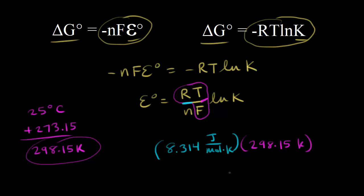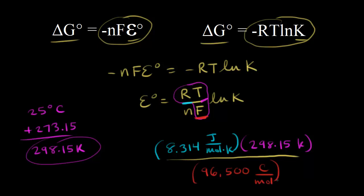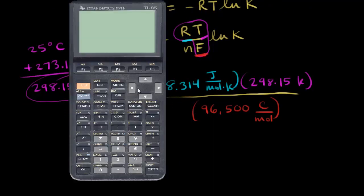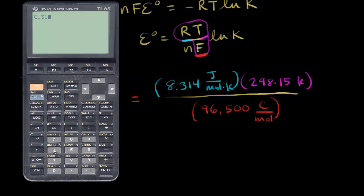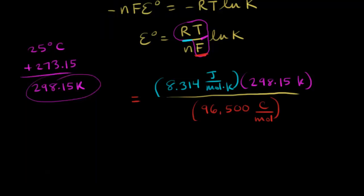This is all divided by Faraday's constant, F, which is 96,500 coulombs per mole — the charge of one mole of electrons. So we're computing RT over F. Using a calculator: 8.314 times 298.15 divided by 96,500 gives us 0.0257.